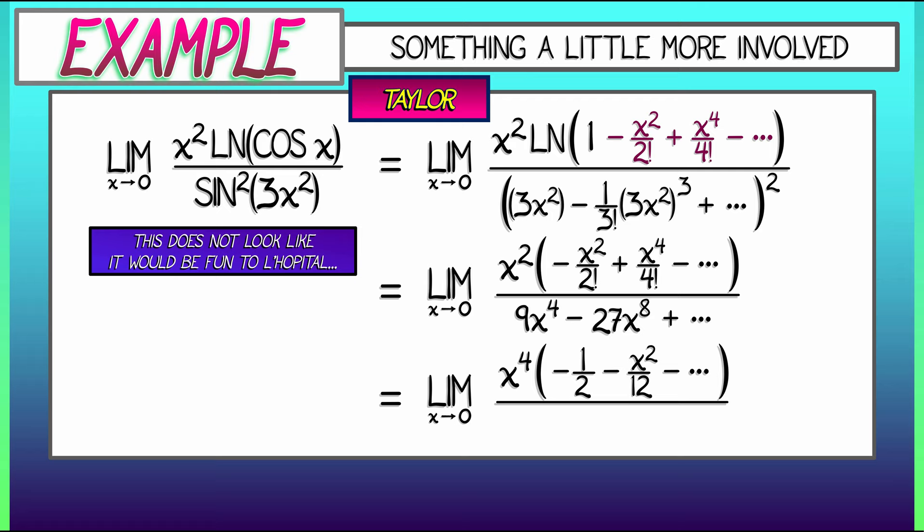Down below, after factoring out that x to the fourth, what I have is a leading order term of 9, followed by negative 27x to the fourth, and a bunch of other stuff. Those x to the fourths cancel. And what really matters is the coefficients in front of them. That's going to be negative one half up top, 9 below, giving me a final answer of negative one eighteenth.